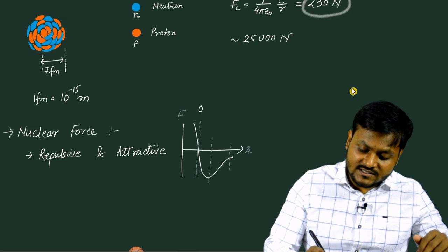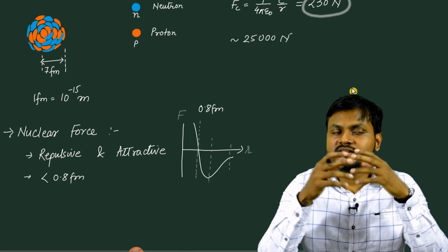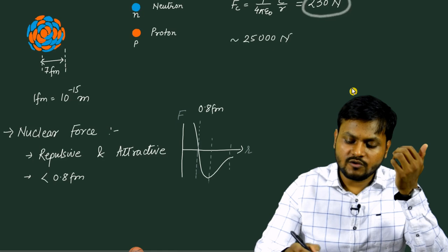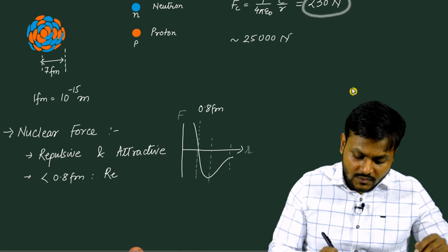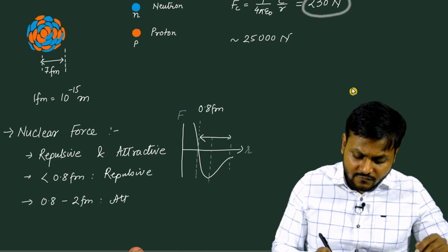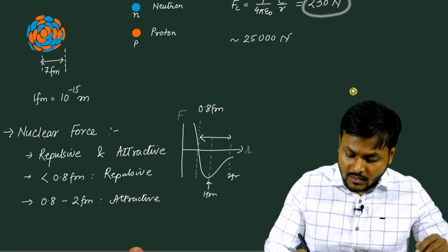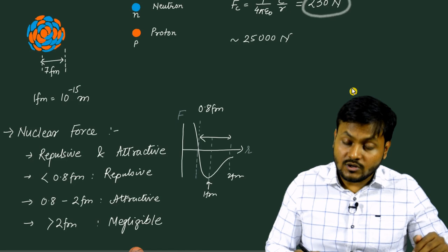At distances less than 0.8 femtometers, this nuclear force is actually very repulsive. It pushes the nucleons apart, and this is necessary because if you do not want the nucleus to collapse onto itself because of such a huge attractive force, you need to balance it with a repulsive force at even shorter distances. At distances from around 0.8 up to about 2 femtometers, this is an attractive force — extremely attractive at around 1 femtometer — and beyond 2 femtometers, it is negligible.